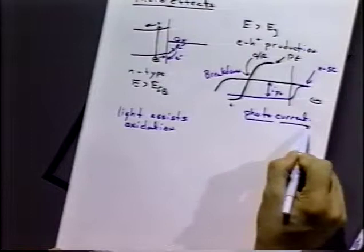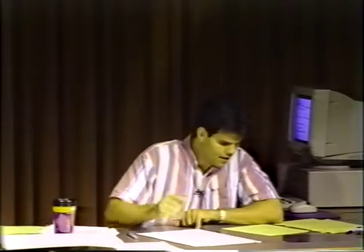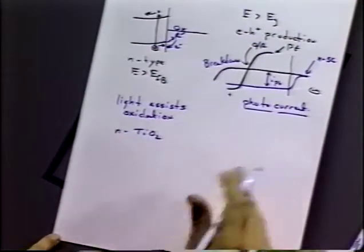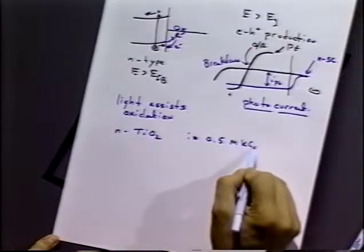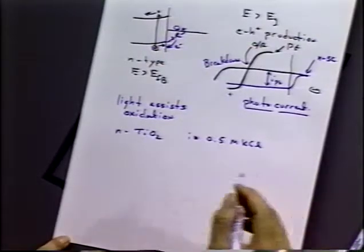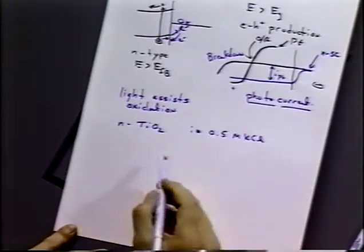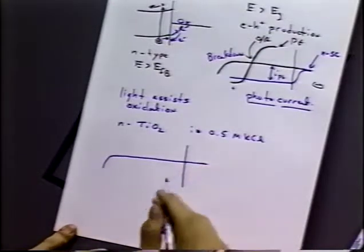So that photo current can be used to catalyze reactions that would otherwise not occur. Things that would normally be very difficult to oxidize can be catalyzed by the addition of light. For example, titanium dioxide can be doped into an n-semiconducting form in 0.5 molar KCl. Now under those conditions, we would not normally see much of an anodic current for a wide range of potentials, particularly for titanium dioxide, which is not a particularly conductive material. It's the stuff that you use for paint pigments and so on. It doesn't conduct electricity. But if you have it n-doped, what can happen is that...